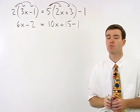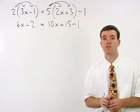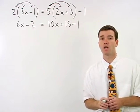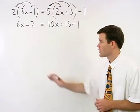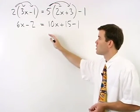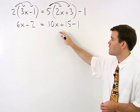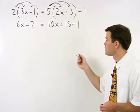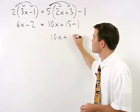Now here's the most important step. Before moving on, make sure that you've simplified both sides of the equation as much as you can. Notice that the left side of the equation cannot be simplified any further. But on the right, 10x plus 15 minus 1 can be simplified to 10x plus 14.